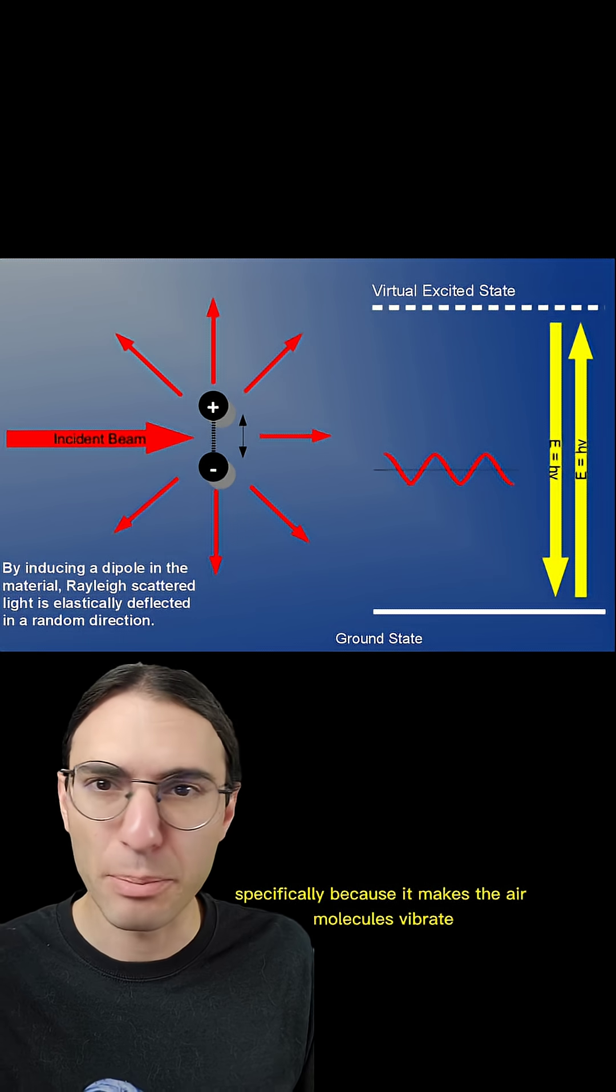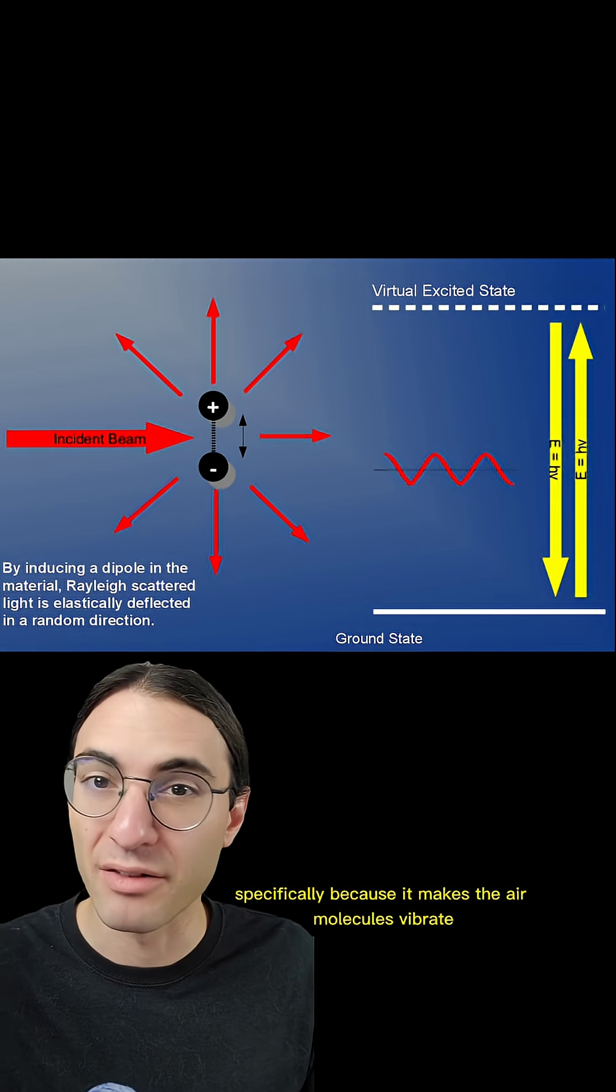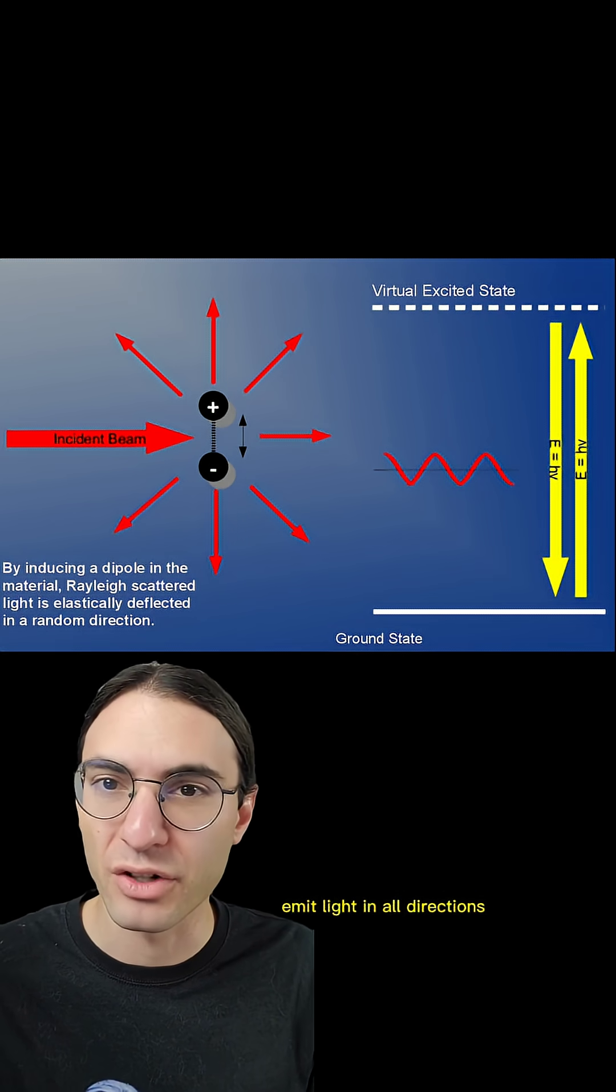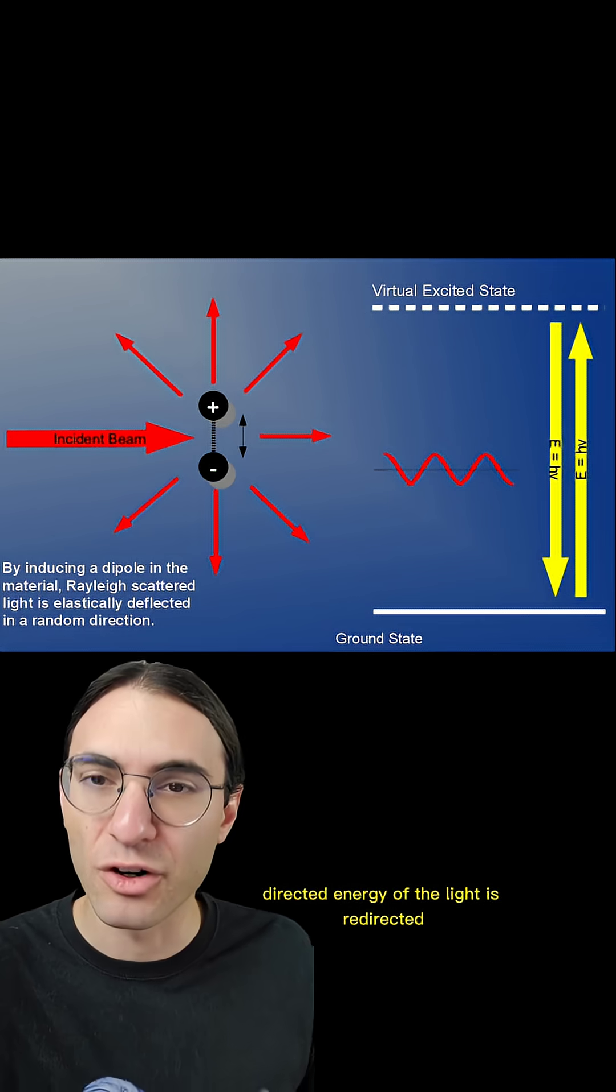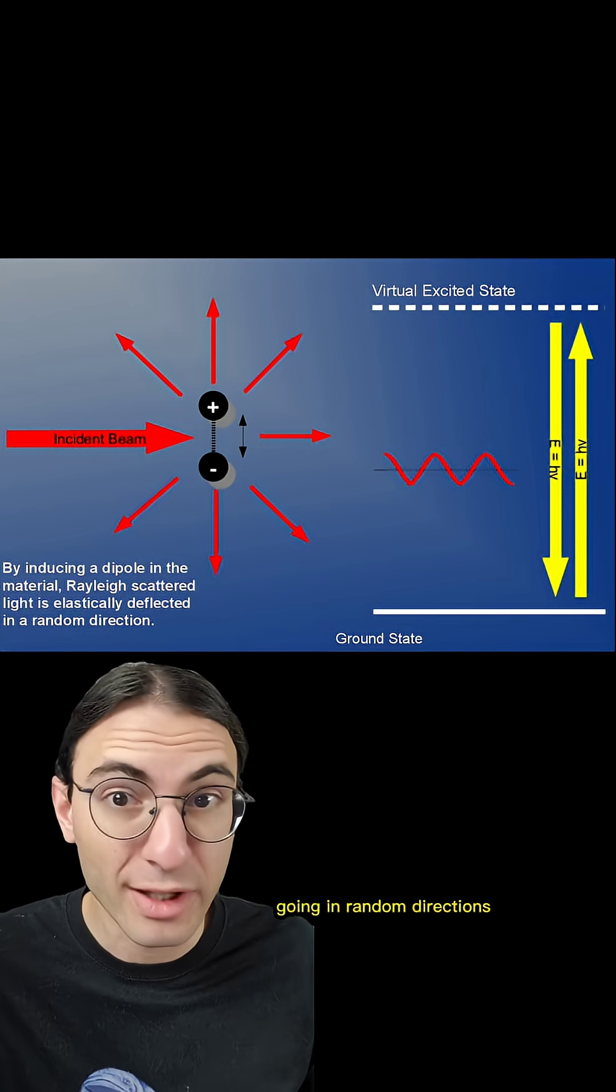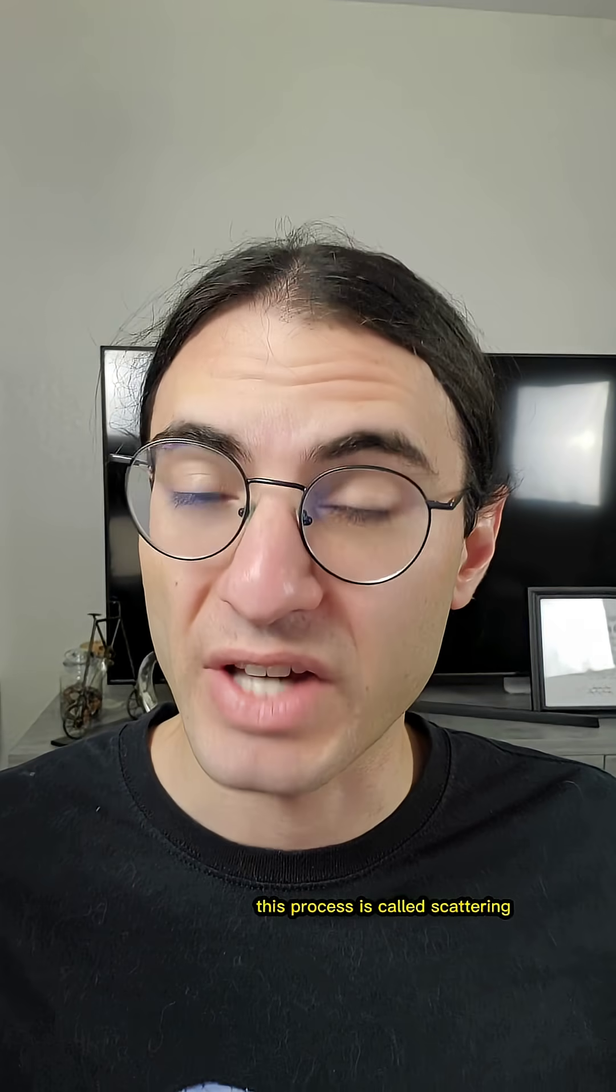And when it does, it can change direction. Specifically, because it makes the air molecules vibrate, and vibrating air molecules emit light in all directions, some of the forward-directed energy of the light is redirected going in random directions. This process is called scattering.